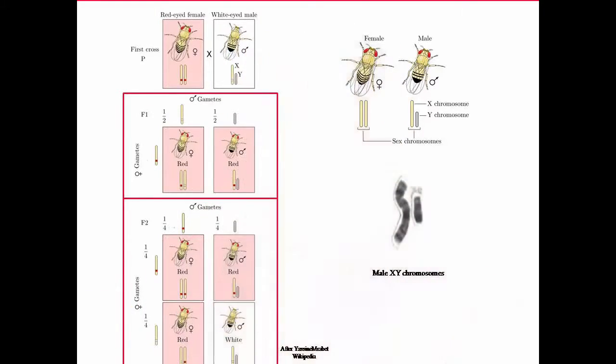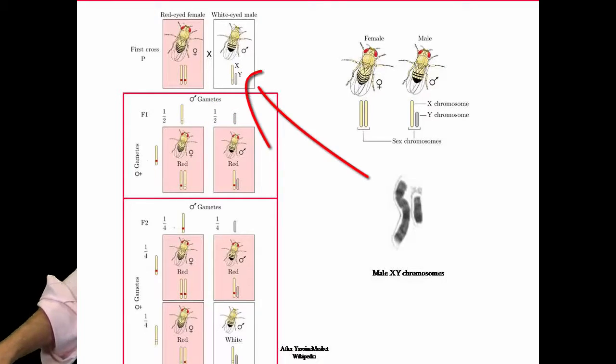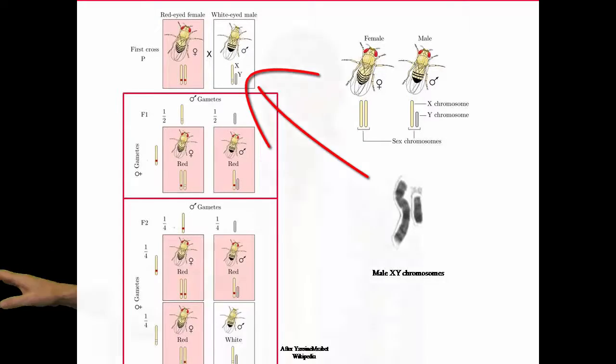What happens here, we've seen this already with Mendel. So I won't go into much detail. But he takes the female red-eyed fly. That fly has two X chromosomes, each with a red-eyed trait, which is dominant. And then he's got a male with an X chromosome, which has the recessive white-eyed trait on it, and a Y chromosome, which has no trait on it related to flies.